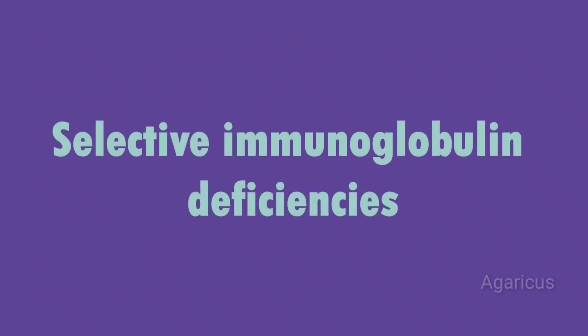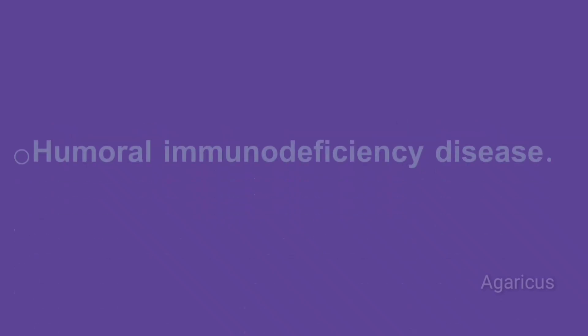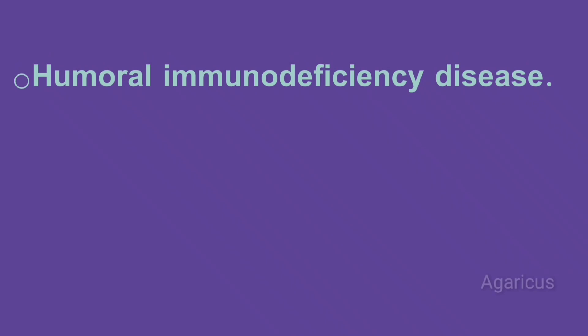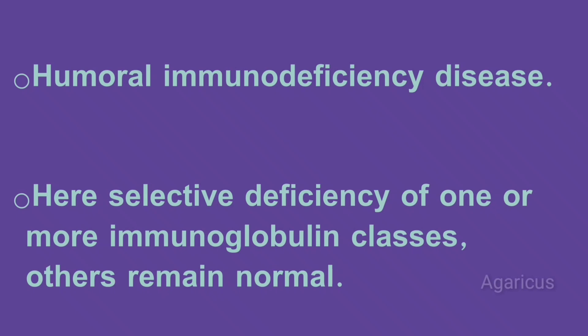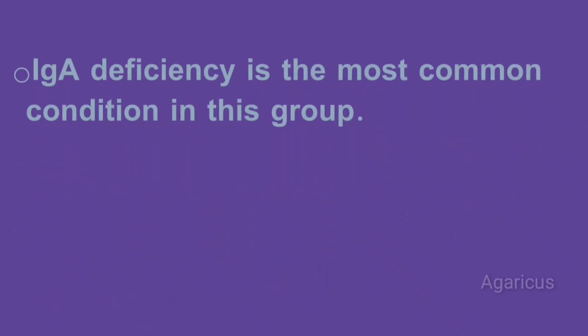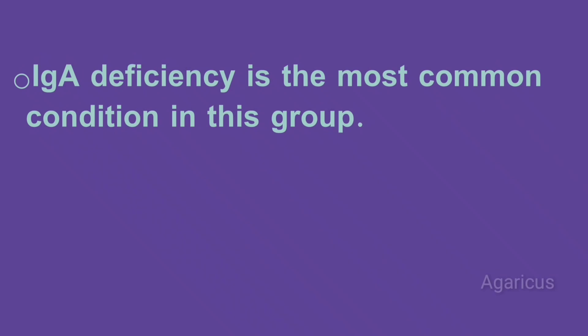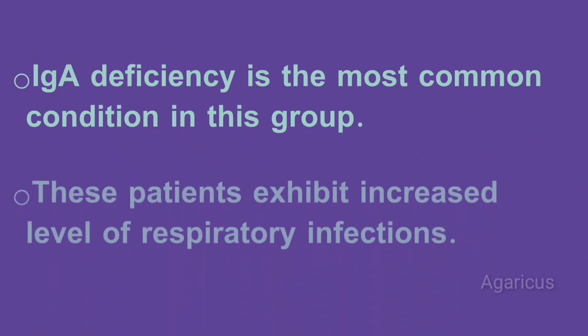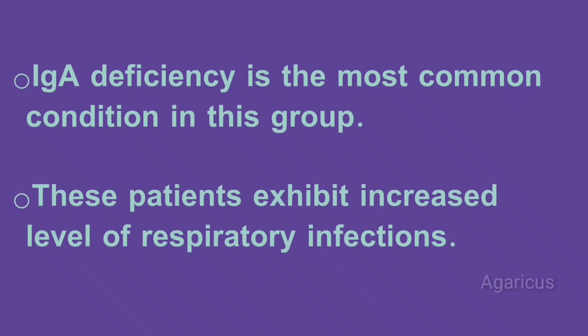Next we are discussing selective immunoglobulin deficiencies. It is a humoral immunodeficiency disease where there is selective deficiency of one or more immunoglobulin classes while others remain normal. Immunoglobulin A deficiency is the most common condition in this group. These patients exhibit increased levels of respiratory infections.